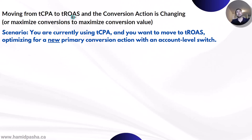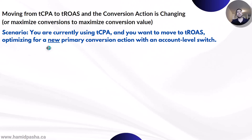Next scenario: moving from tCPA to tROAS, but this time the conversion action is changing. You are currently using target CPA and you want to move to tROAS, optimizing for a new primary conversion action with account level switch. In the previous scenario we didn't change the conversion action, but now you are in a situation where you want to change to target ROAS with a new primary conversion action. So you will have two changes: the change in your primary conversion action, and the change in your bidding strategy.